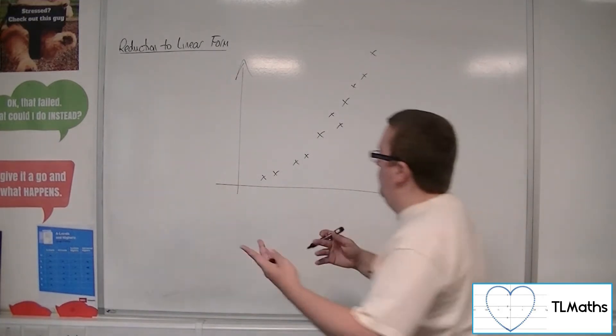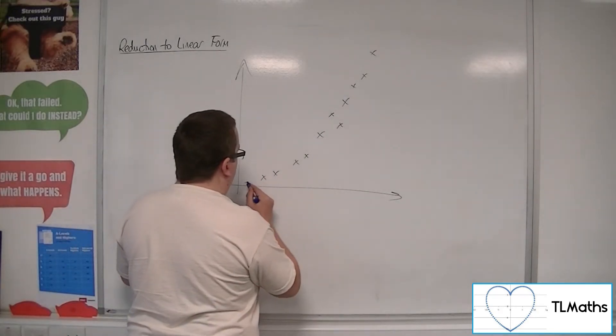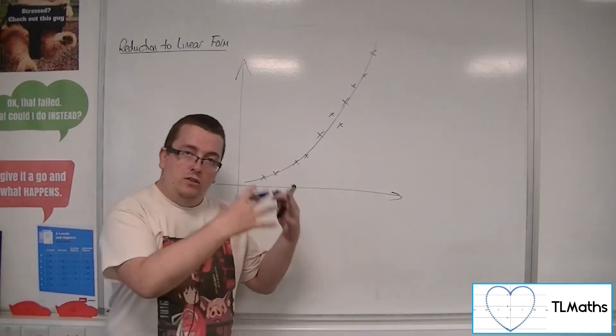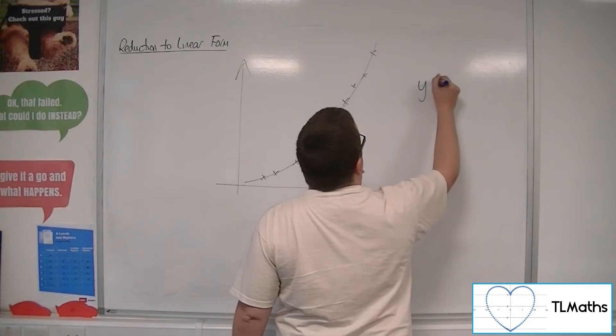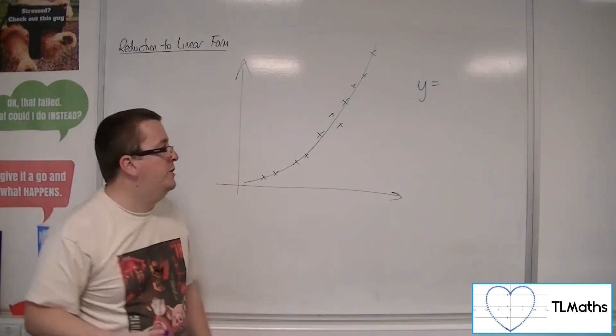So you might think, this looks like there's a curve, some curve that the data is attached to. And you might think, well, let's say it looks like some kind of polynomial, for example.